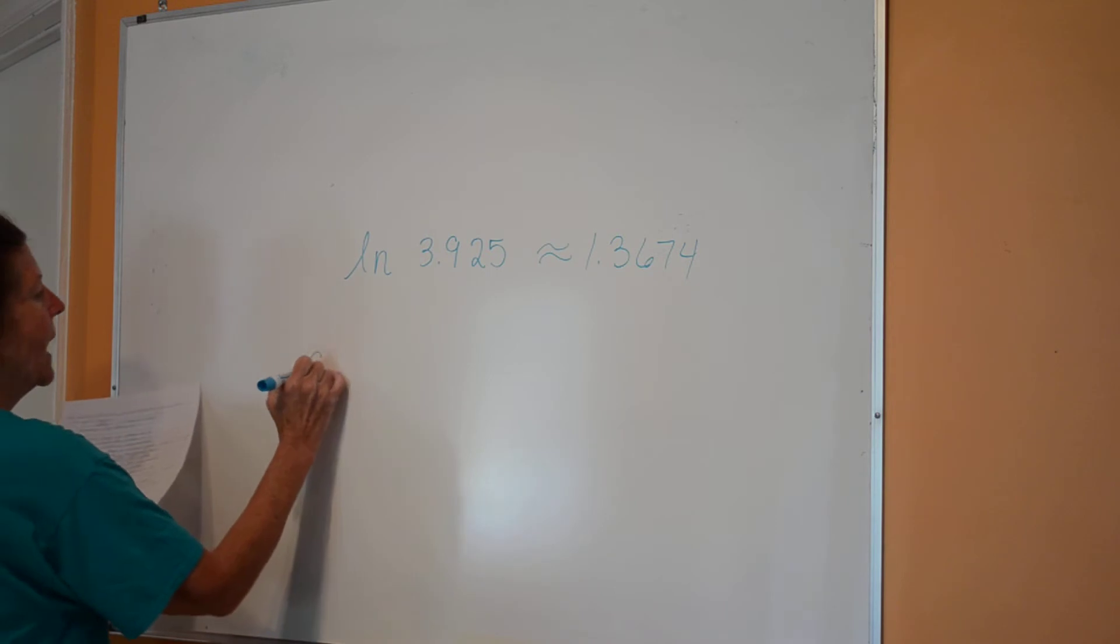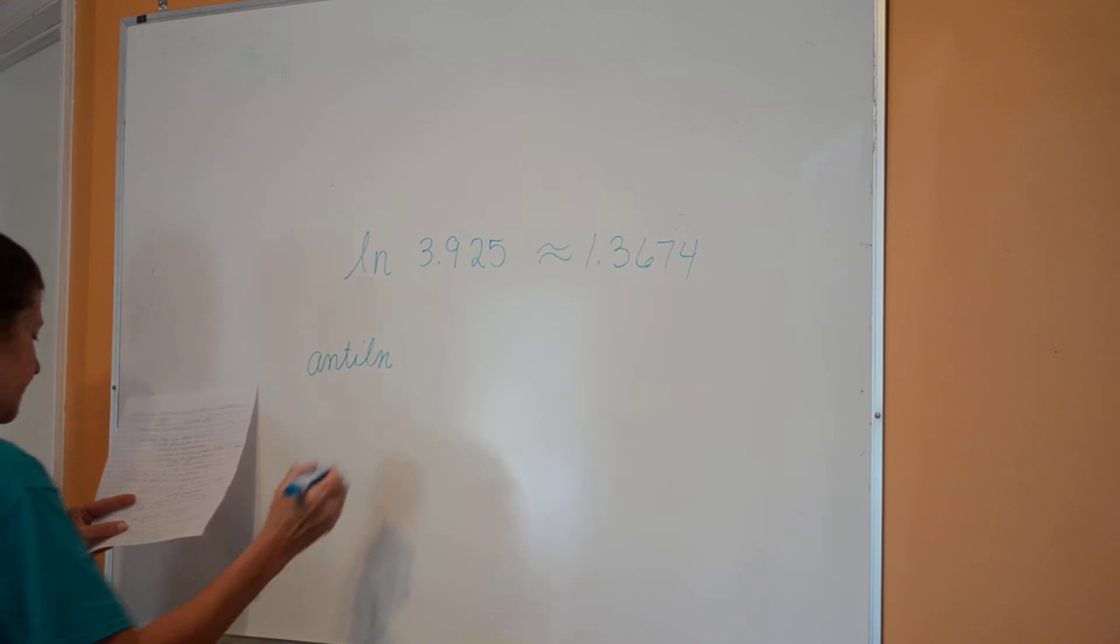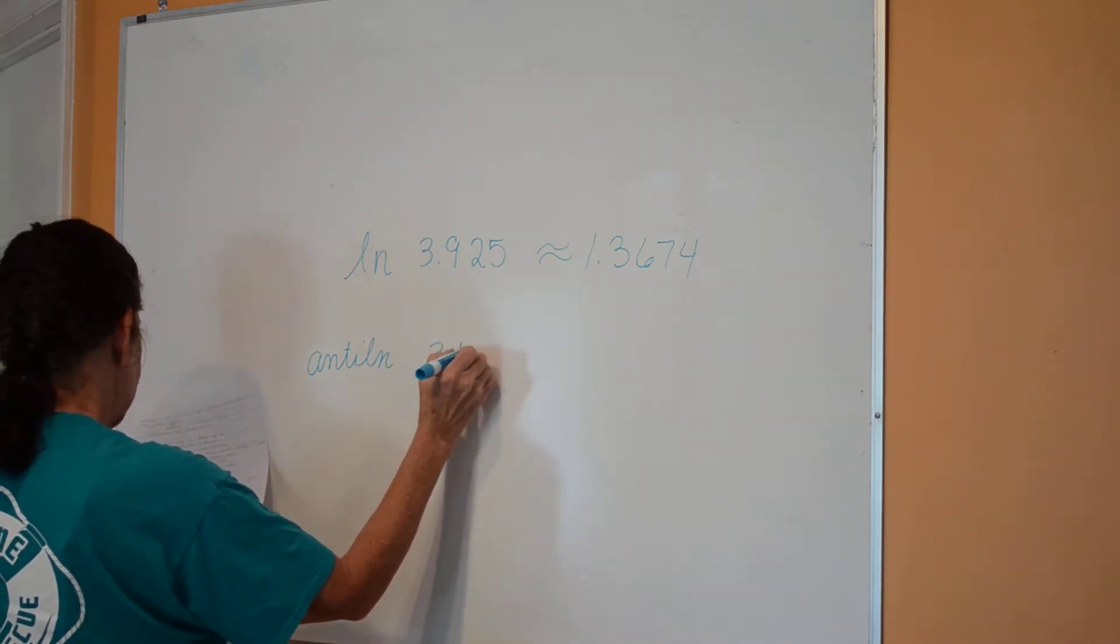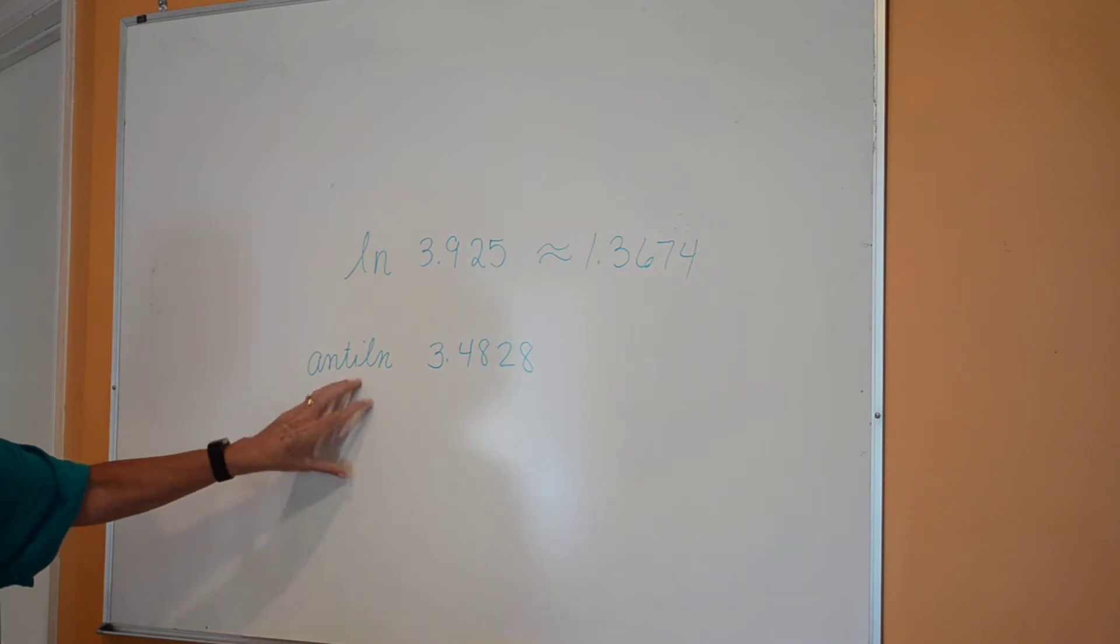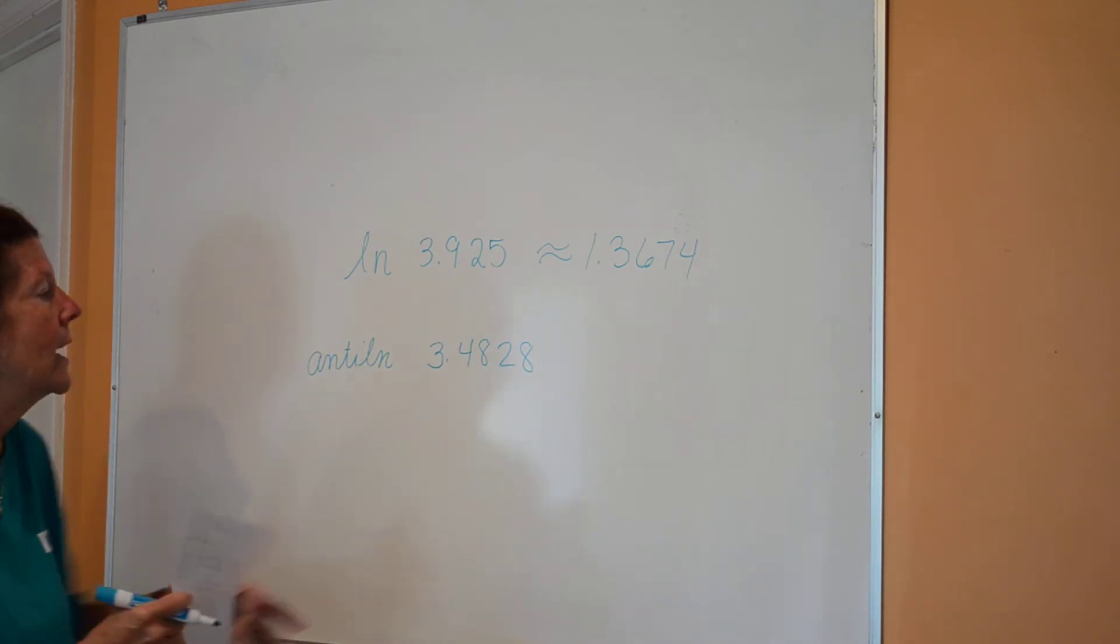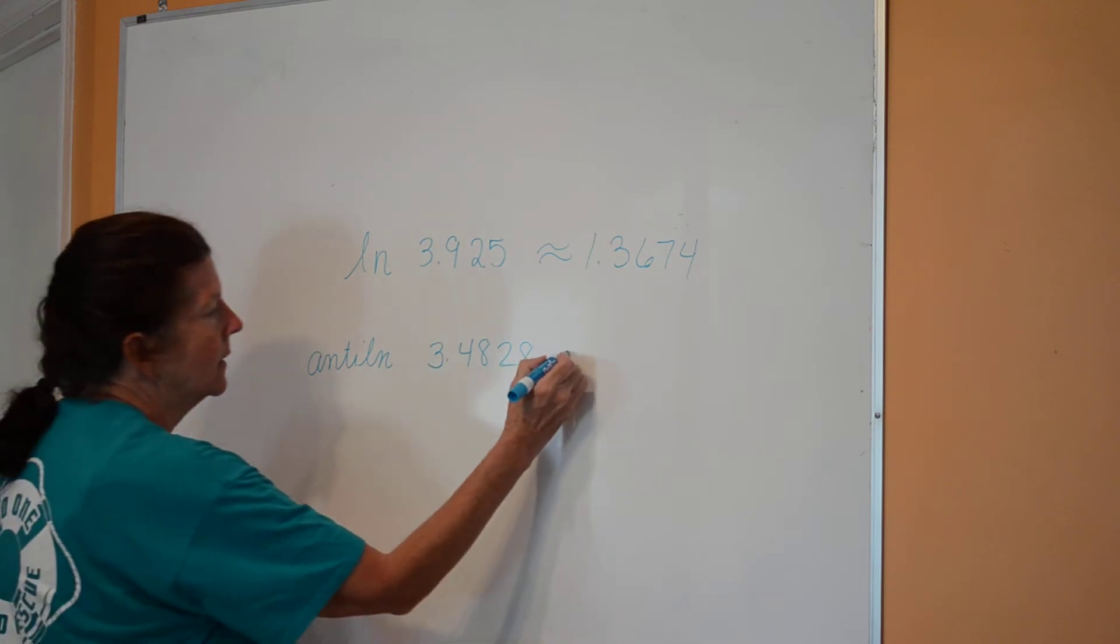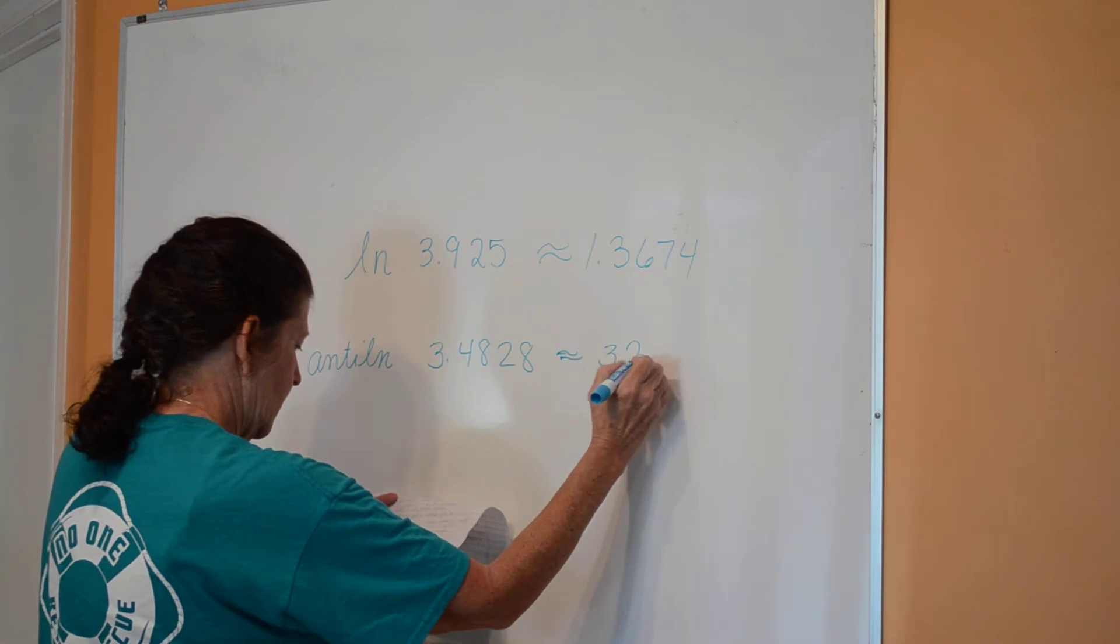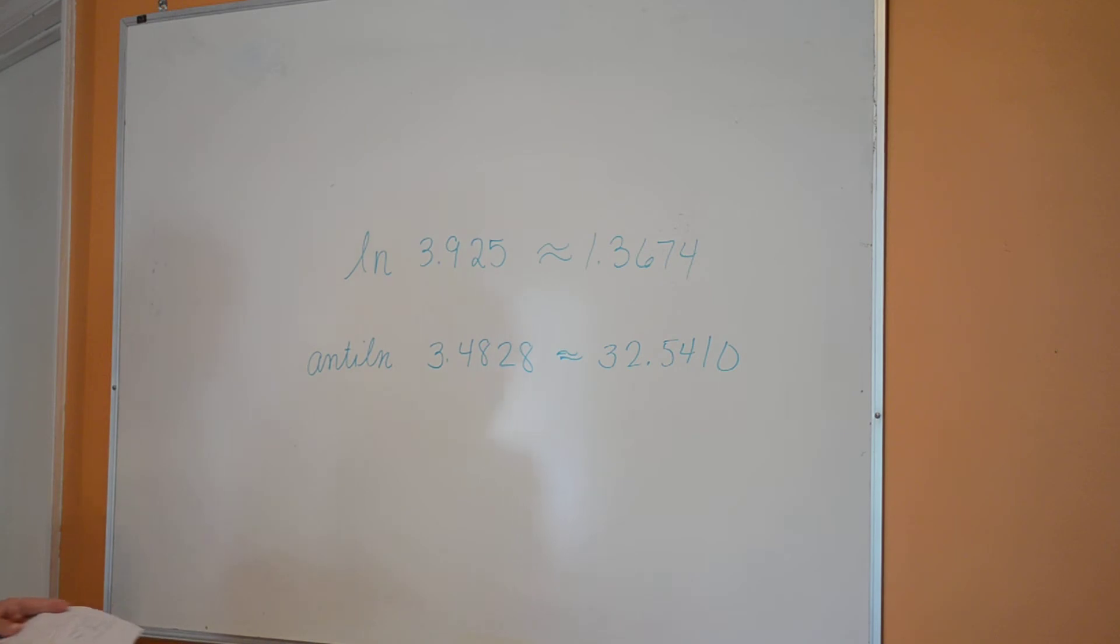And then if I ask you to do the anti-natural log of 3.4825, do that on your calculator. Remember, that's your second and then your ln button, and then put that in. And it should give you approximately 32.5410 if you've plugged it in correctly.